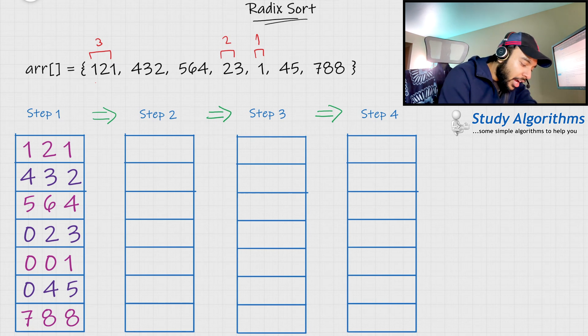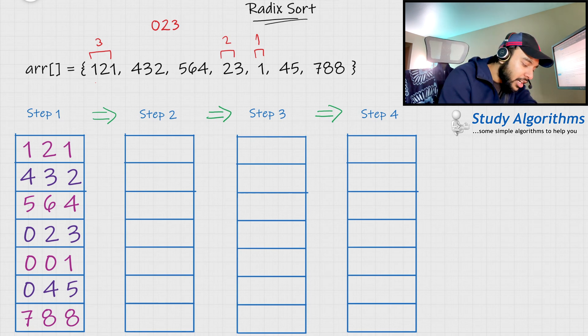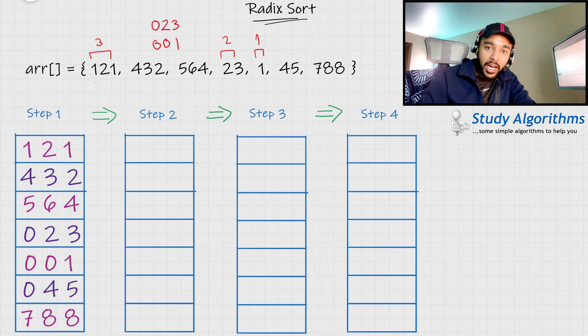What you can do is, when you have the number 23, you can assume that it has an imaginary zero written behind it. So, 23 is again now made up of three digits. Similarly, when you have the number 1, you can assume that there are two imaginary zeros behind it. So, this way, I can have all of the elements having same number of digits.